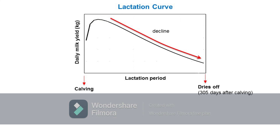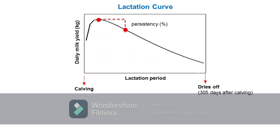The rate of decline in daily milk yield from one point to another within the curve is the persistency of lactation. The peak of lactation and persistency define the shape of the lactation curve, hence are the factors that determine the total milk yield throughout the lactation period.